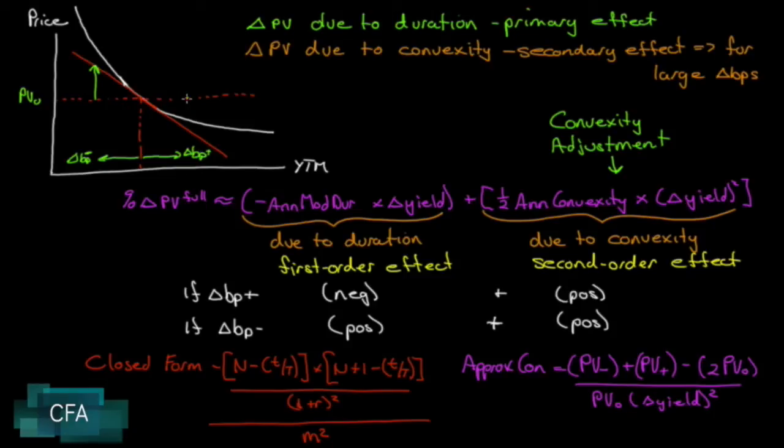And for an increase in yield, we calculate it from the present value down to the tangent curve, so we sort of overshoot on an increase in the yield.